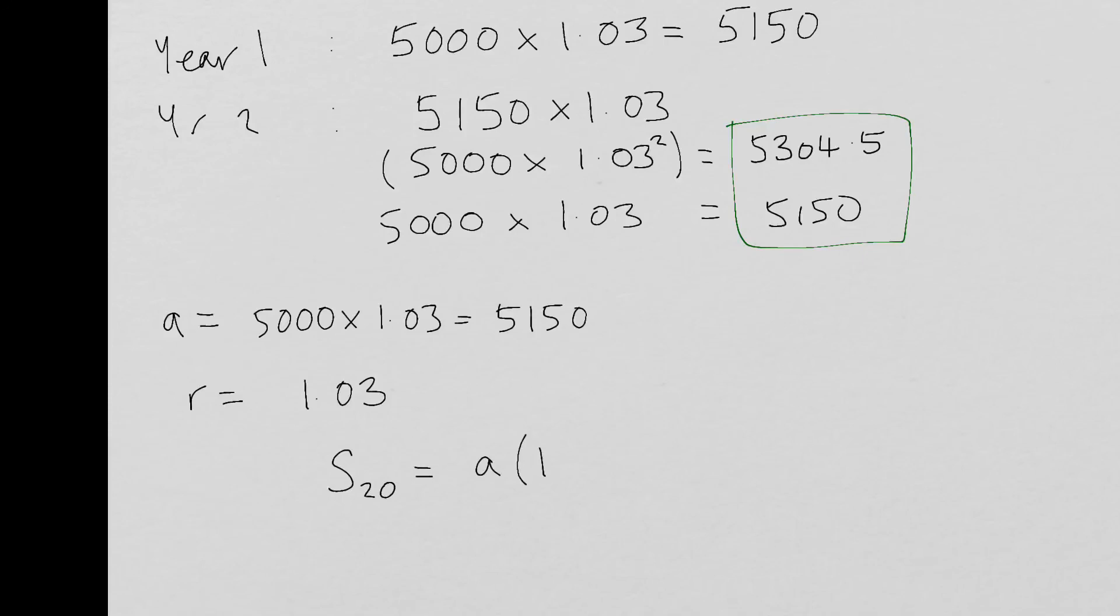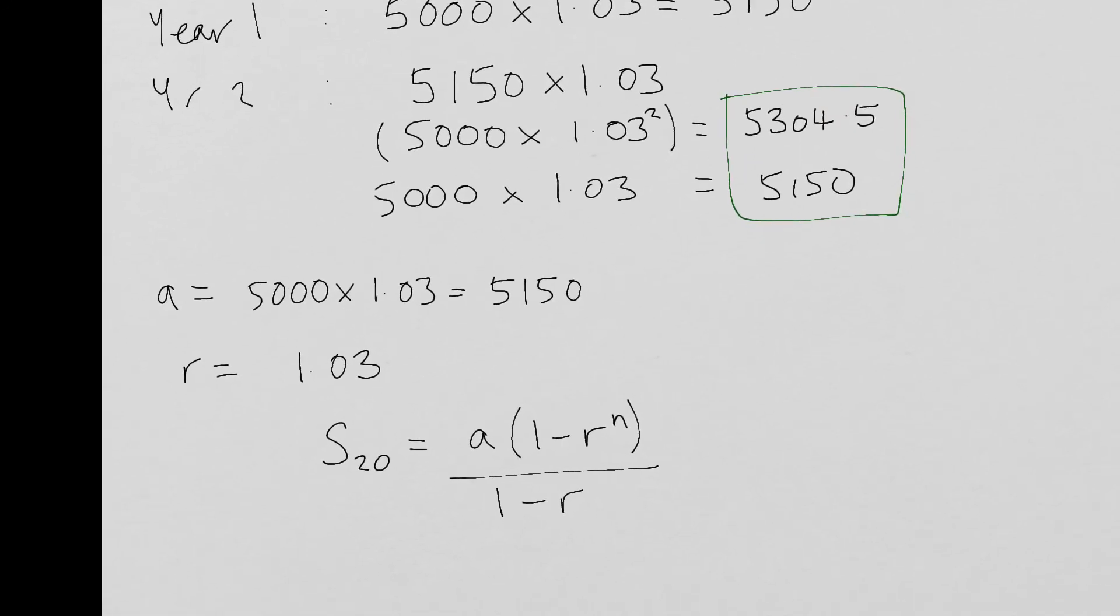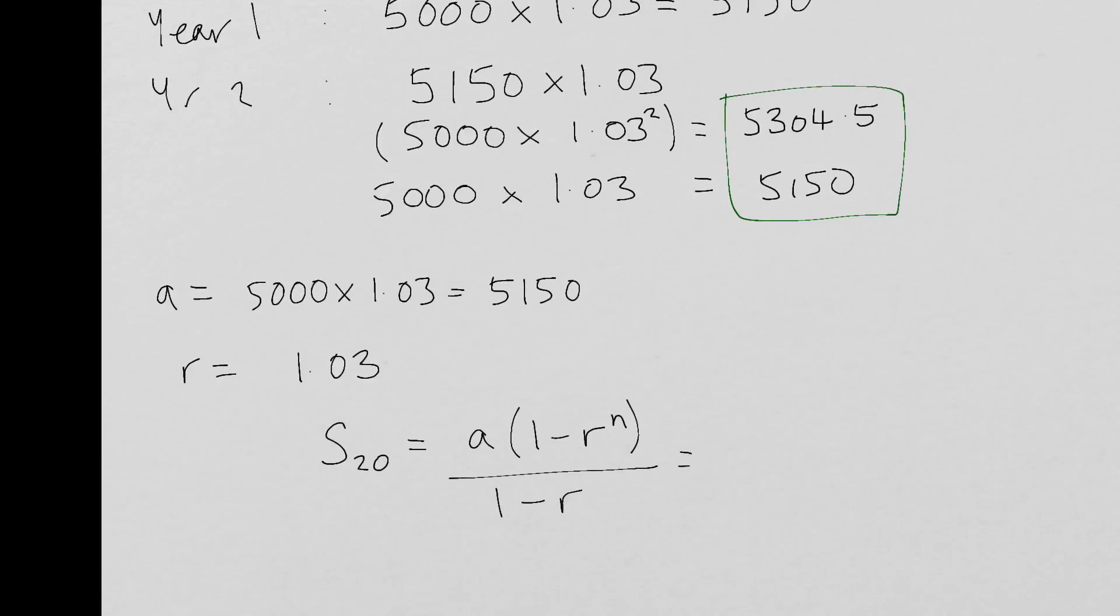So the quickest way for me to find the sum of those 20 years is just to use the formula. So a bracket, 1 minus r to the power of n, all over 1 minus r. So if we substitute those in, we've got this 5,150 multiplied by 1 minus 1.03 to the power of 20, all over 1 minus 1.03. And if you want to give that to the nearest pound, this person, after 20 years, would have £138,382 in his bank account. And there we have it. So that's the final part of that question. And that's how you would use it in the modelling context. Thanks for watching, guys.